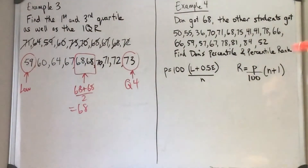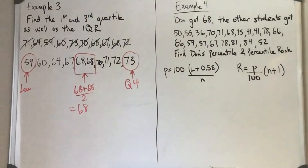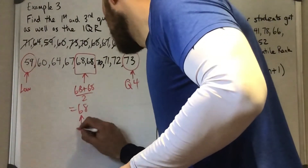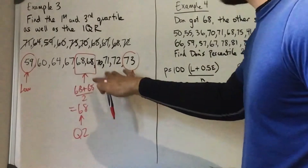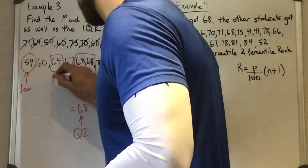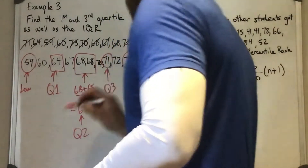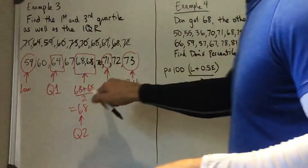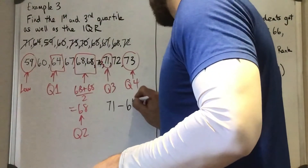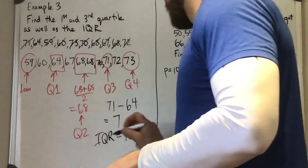In another example, if there are two values for your middle — and this will happen anytime you have an even number of entries — just find the average of the two. So this would be Q2. We can see visually there are three values to the left and three to the right, making it easy to identify Q1 and Q3. Our interquartile range is the difference between Q3 and Q1, so 71 minus 64 gives us an IQR of 7.